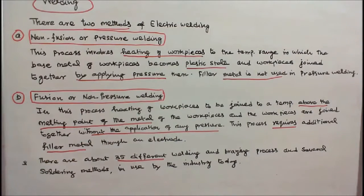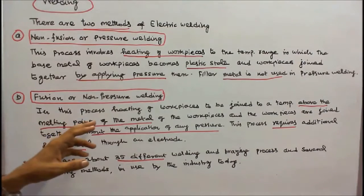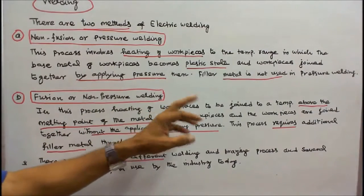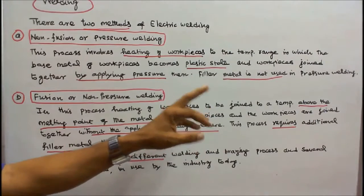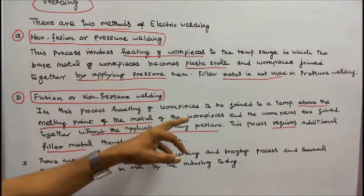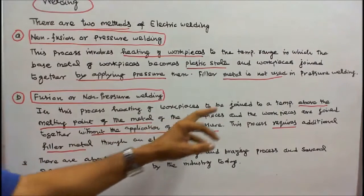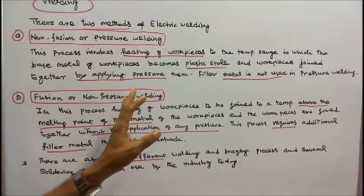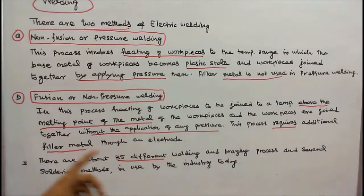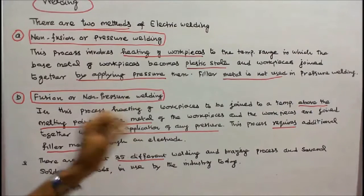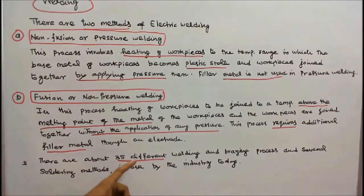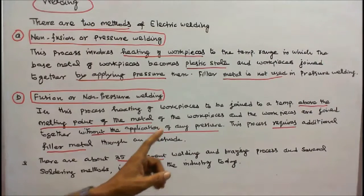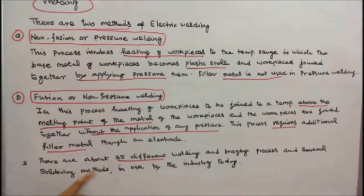The next is fusion or non-pressure welding. In this process, heating of workpieces to be joined to a temperature above the melting point of the metal of the workpieces, and the workpieces are joined together without the application of any pressure. This process requires additional filler metal through an electrode. There are about 35 different welding and brazing processes and several soldering methods in use by the industry today.